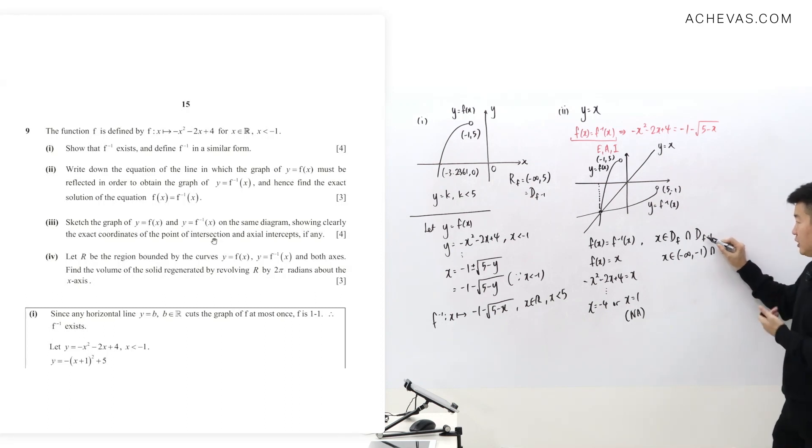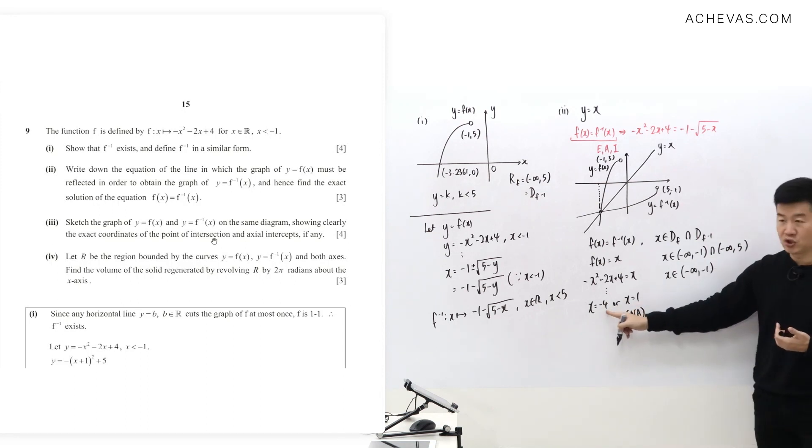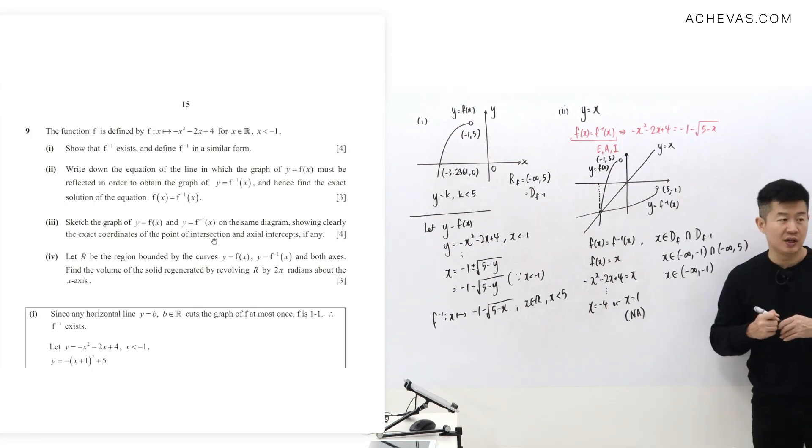And the domain of f inverse is from minus infinity all the way until 5. So the overlapping region tells me that x must be less than minus 1. So minus 4 is going to be my answer. This is an improvisation question.